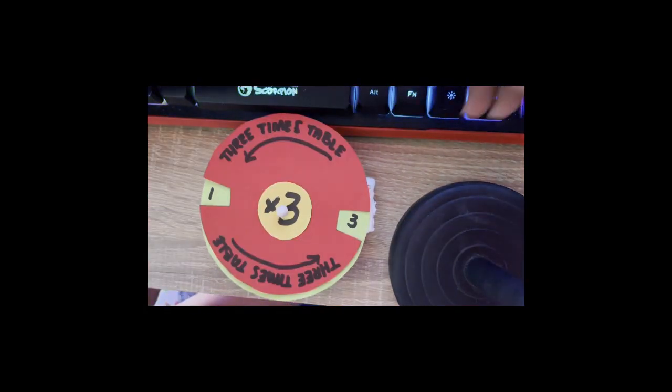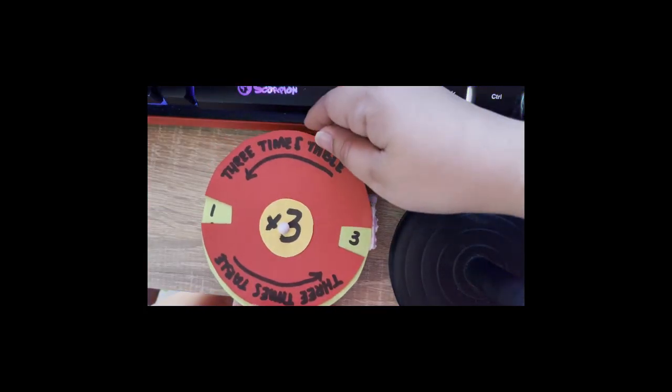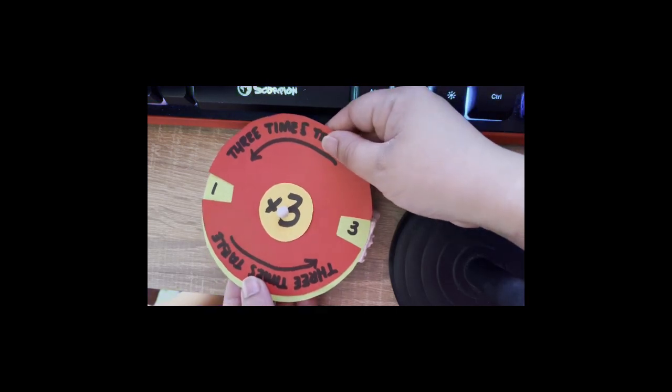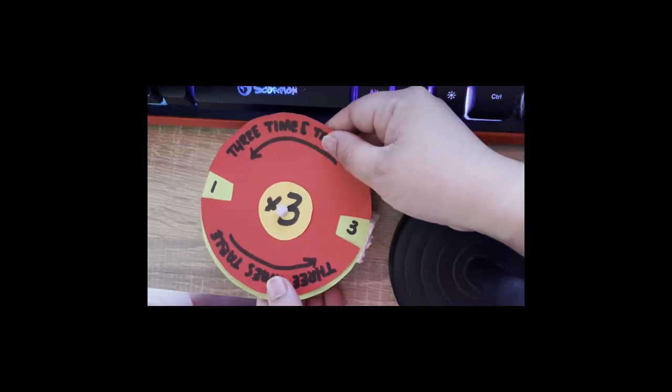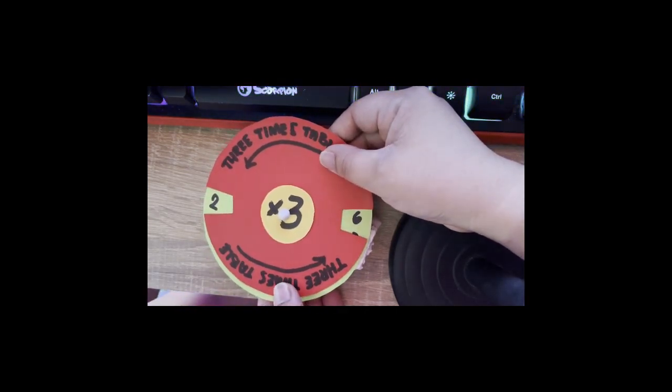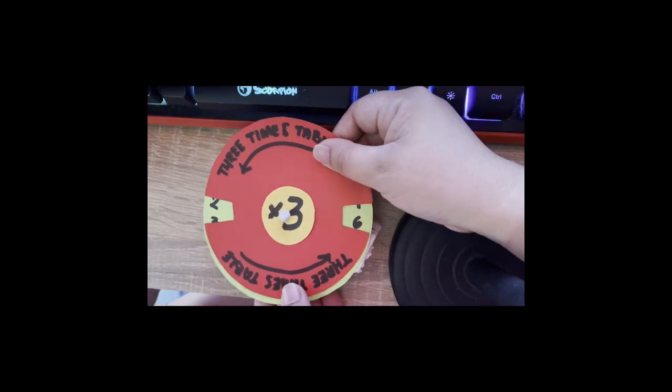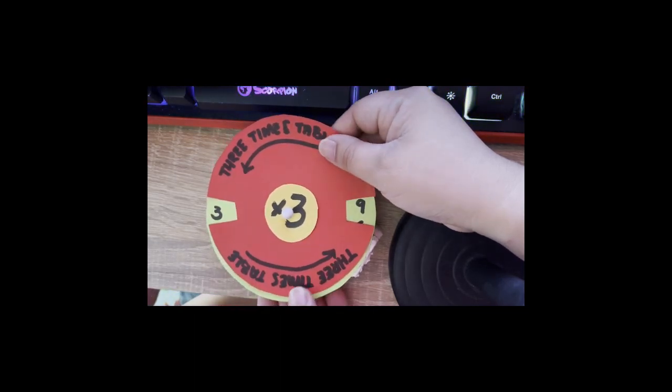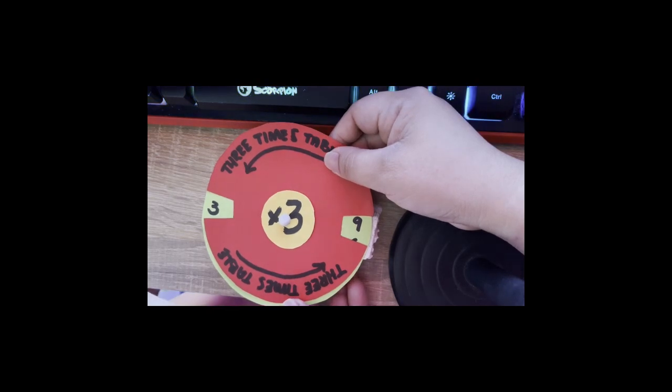3 times table. 1 times 3 is equal to 3. 2 times 3 is equal to 6. 3 times 3 is equal to 9.